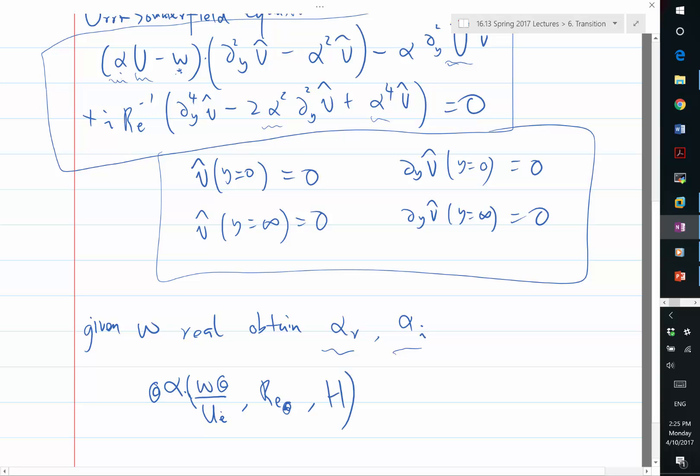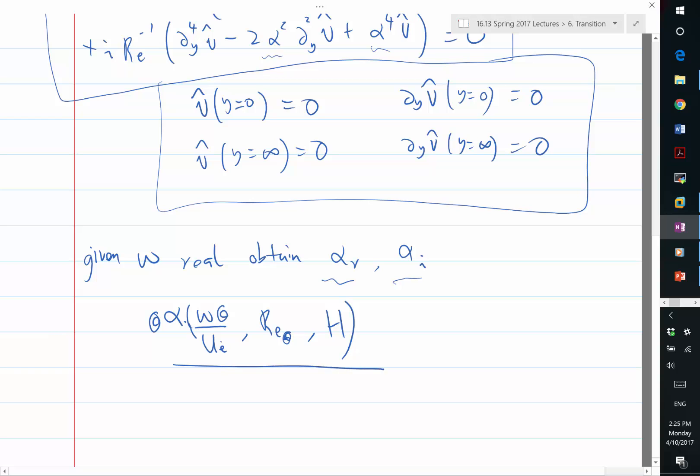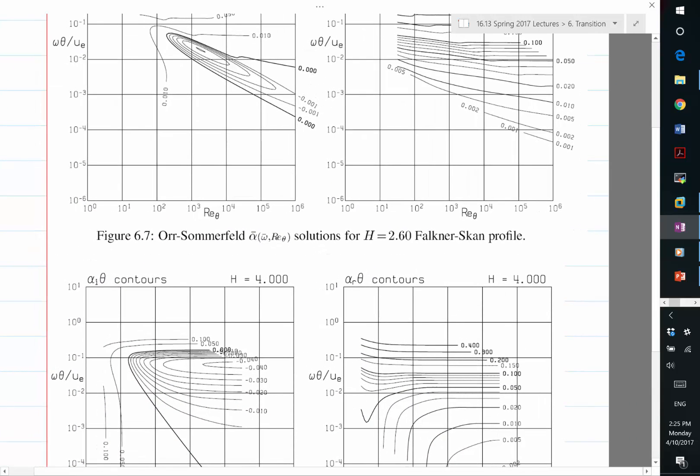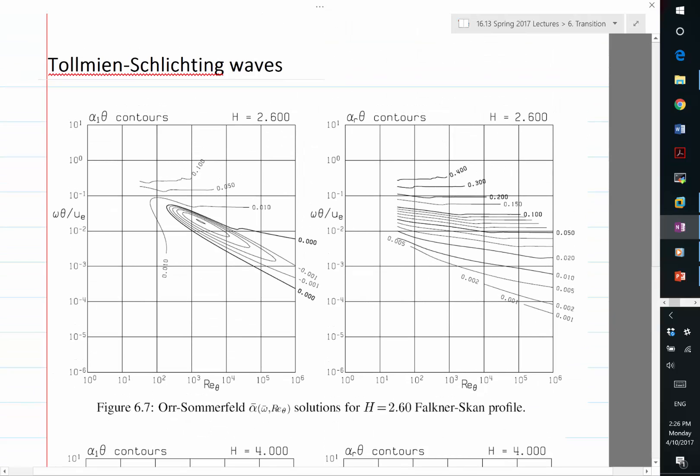This is what we'll be looking at. The way to obtain this is by numerically solving the Orr-Sommerfeld equation for different H, for different Falkner-Skan solutions corresponding to different Hs, for different Re thetas, and also for different omegas. Let's start looking at some of these. The modes that grow are called the Tollmien-Schlichting waves.